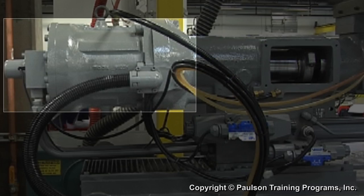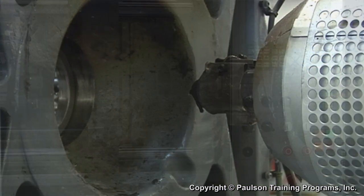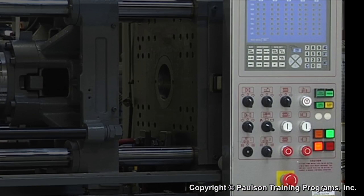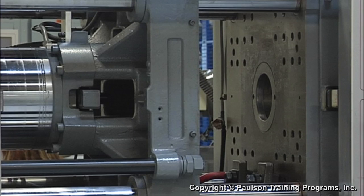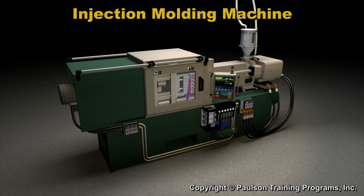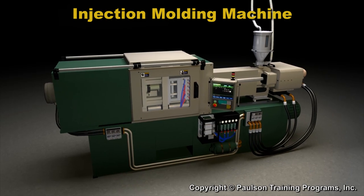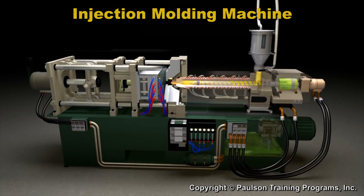This is the injection cylinder, the screw drive motor, the barrel, the nozzle area, and the control panel. These are the two platens which hold the mold and the clamp mechanism. To understand how an injection molding machine works, we'll use a 3D model.